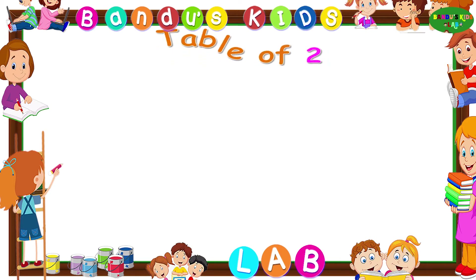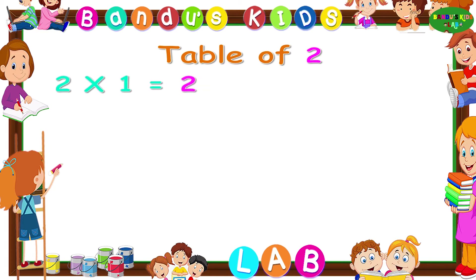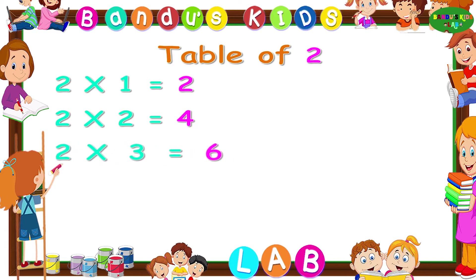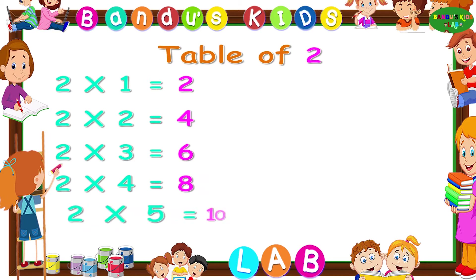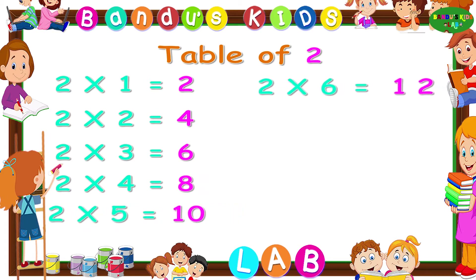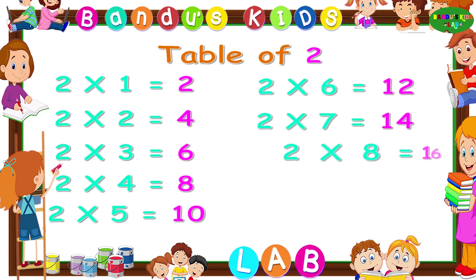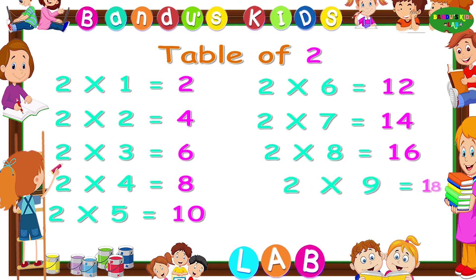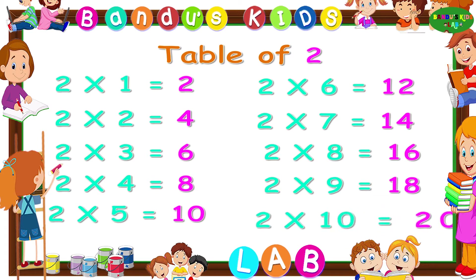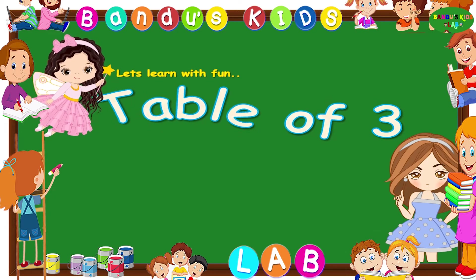Now let's revise the table of two. Two ones are two. Two twos are four. Two threes are six. Two fours are eight. Two fives are ten. Two sixes are twelve. Two sevens are fourteen. Two eights are sixteen. Two nines are eighteen. Two tens are twenty. Table of three.